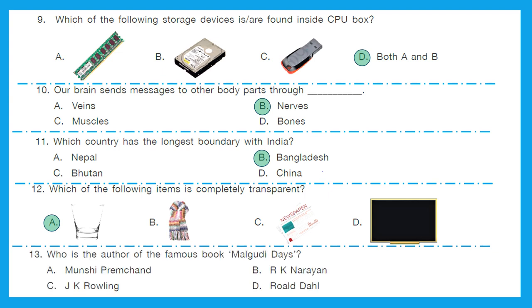Question 13: Who is the author of the famous book Malgudi Days? Is it Munshi Premchand, R.K. Narayan, J.K. Rowling, or Roald Dahl? The right answer is option B, R.K. Narayan. You can also watch Malgudi Days on YouTube — they are very good, and as a kid I really enjoyed watching it.